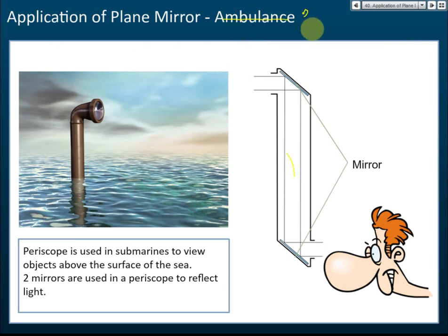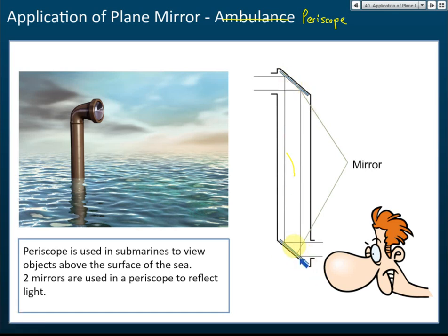A periscope is another application of plain mirrors. It is used in submarines to view objects above the surface of the sea. Two plain mirrors are placed at 45 degrees so that after reflection, the light travels downward at 90 degrees to reach the eye. Importantly, the image formed is upright — for example, point A stays above point B — so the image is upright.